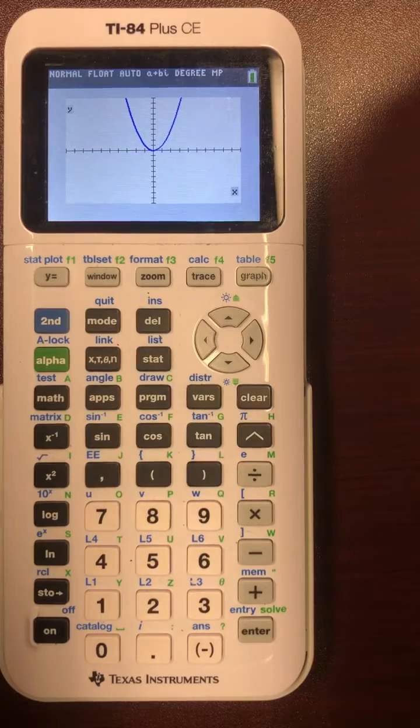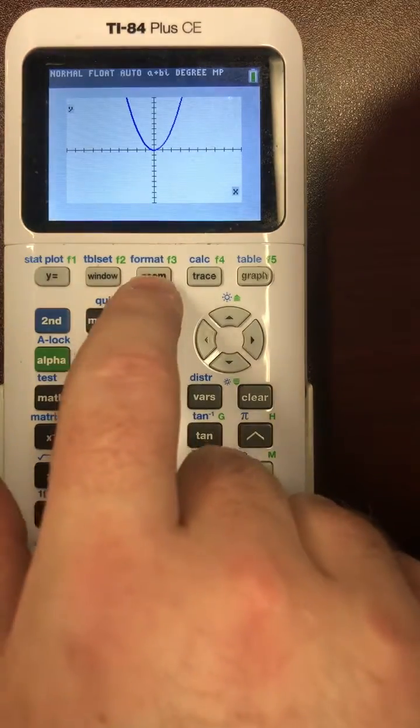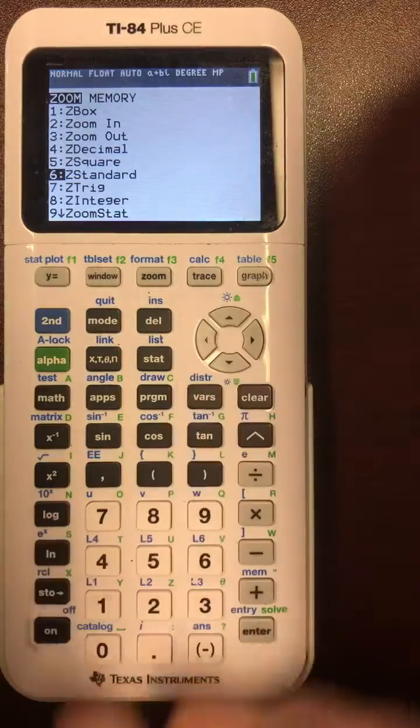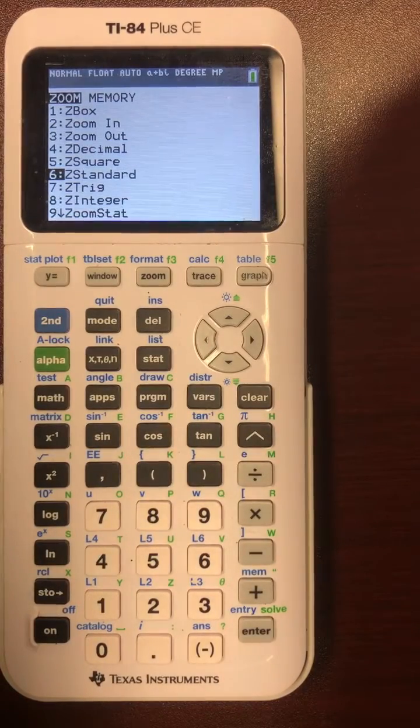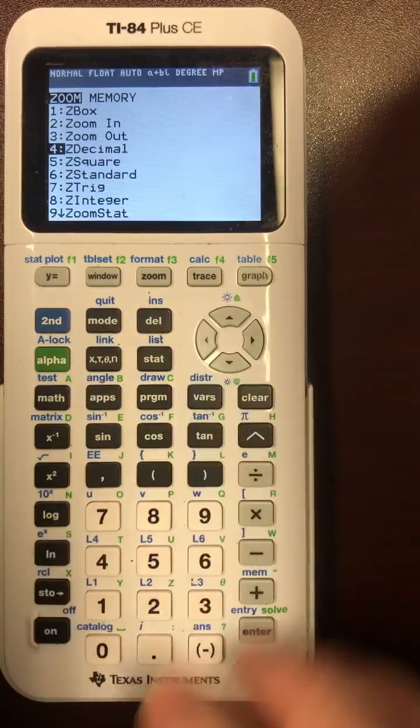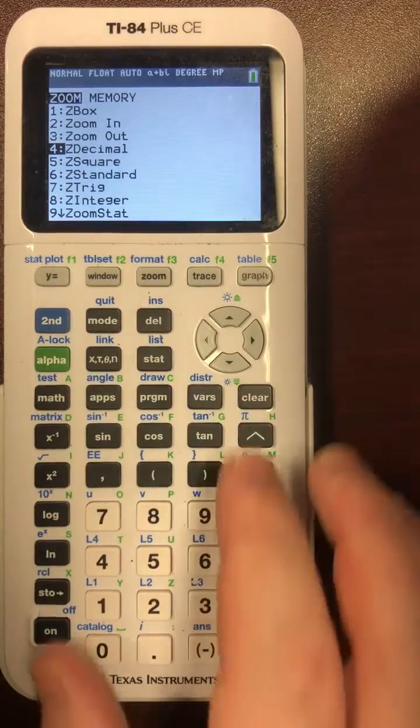Now if your graph settings are all messed up you can hit zoom up here in the middle and either do standard for a bigger graph with less clean numbers or you can use the decimal for a prettier graph that is more zoomed in. Either one works.